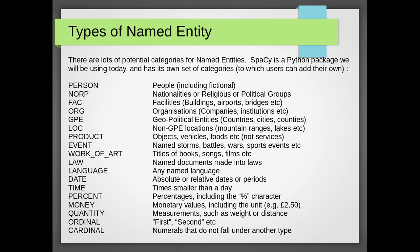Further SpaCy categories include: EVENT — named storms, battles, wars, sporting events; WORK_OF_ART — titles of books, songs, films; LAW — named documents made into laws; and LANGUAGE — any named language such as English or French. Moving into numeric types: DATE covers absolute or relative dates or periods, such as '1st of January 1962' or 'last month.' TIME captures named time expressions smaller than a day.